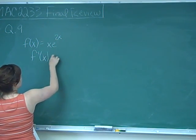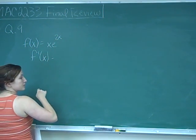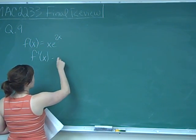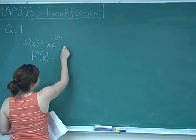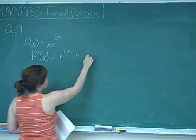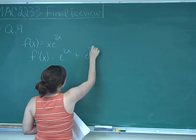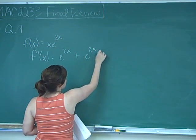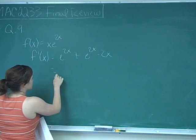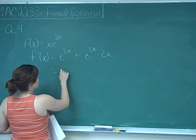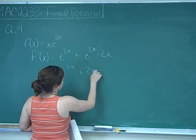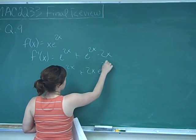So f prime of x — we're going to have to use the product rule. The derivative of the first is just 1 times the second, which is e to the 2x, plus the derivative of the second, which is e to the 2x times 2, times the first. So you get e to the 2x plus 2x e to the 2x.